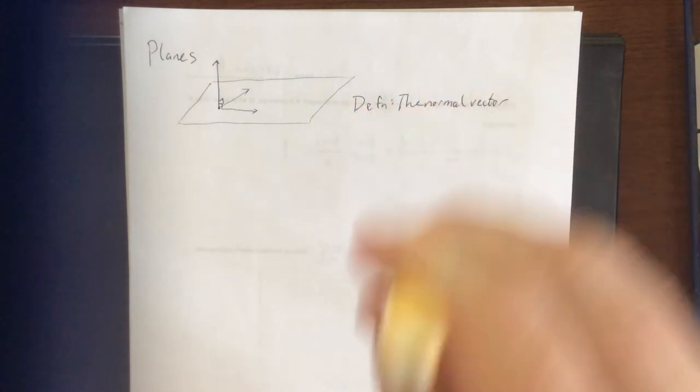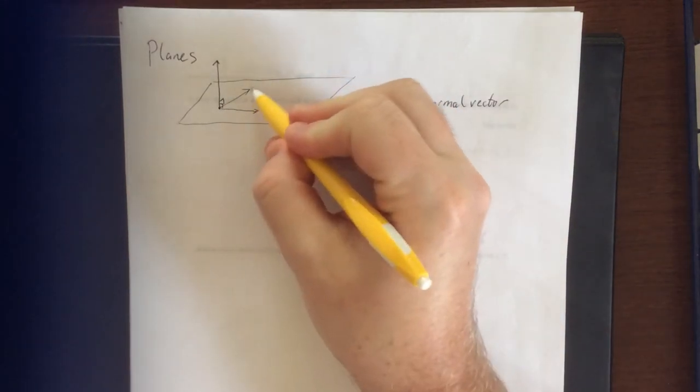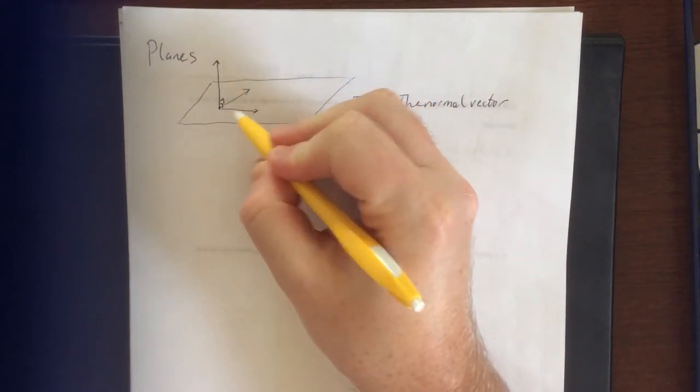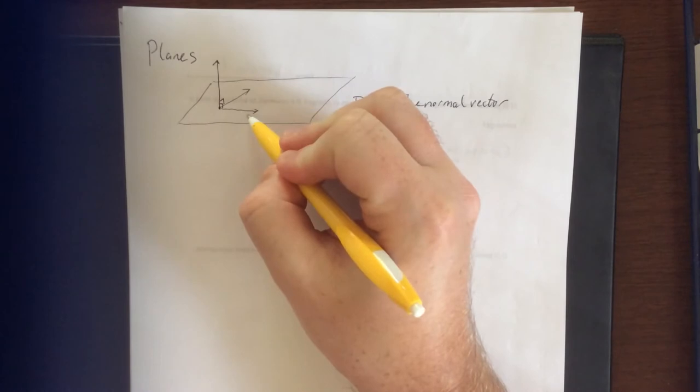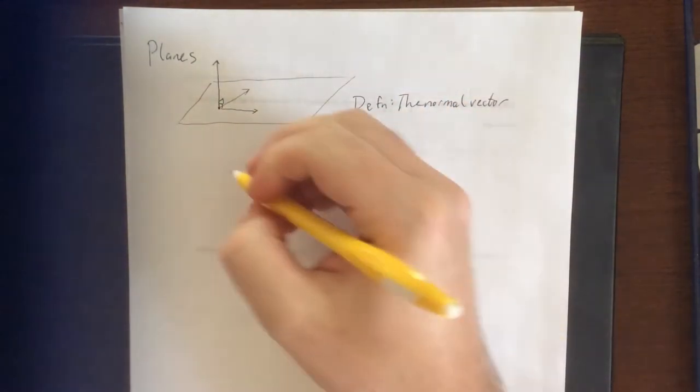Something along those lines. Given that we started with two vectors within the plane, we're looking for something that is orthogonal to both. We're going to see some cross products show up from time to time with this.